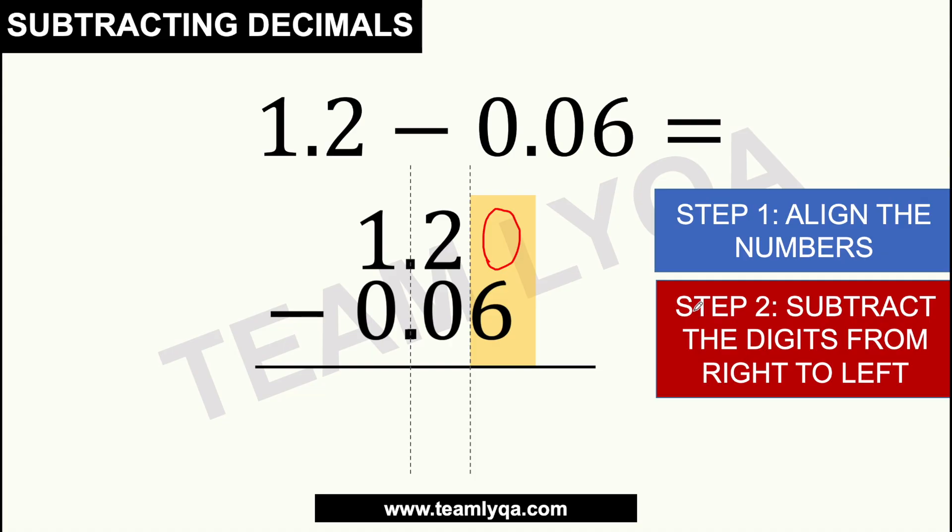So, dito muna tayo sa pinaka-right, you have 0 minus 6. Now, hindi pwede yun. So, magbaborrow tayo dito sa second column. Yung 2, magiging 1 na lang siya. At yung 0 now becomes 10. So, 10 minus 6 is 4. Now, after that, the next column, hindi na siya 2, 1 na lang siya. So, 1 minus 0 is 1. Tapos, ibababa natin yung decimal point dahil pareho na silang nandun. Dito na natin siya ilalagay. And then you have, dito sa column na ito, 1 minus 0, which is going to give us 1. So, the answer is 1.14.